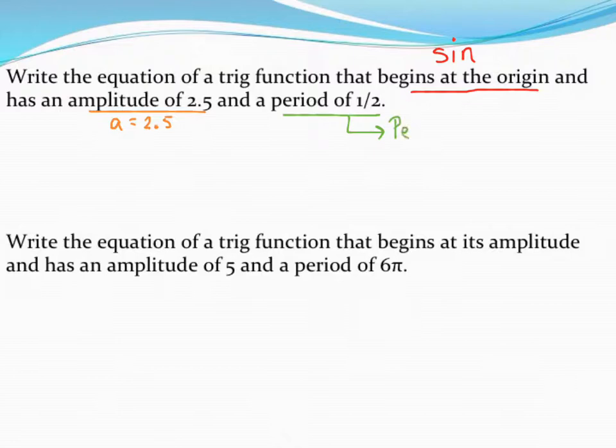Recall that the formula to find the period of a sine or cosine graph is to take 2 pi, the normal period, and divide that by the b value. So let's do a little cross-multiplying to find what our b value is in this case.